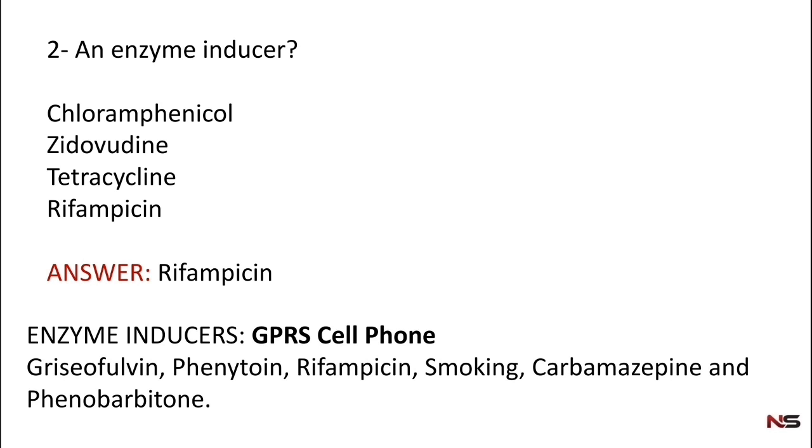Enzyme inducers are griseofulvin, phenytoin, rifampicin, smoking, carbamazepine, and phenobarbitone. You can remember this using the formula GPRS cell phone: G for griseofulvin, P for phenytoin, R for rifampicin, S for smoking, C for carbamazepine, and P for phenobarbitone.